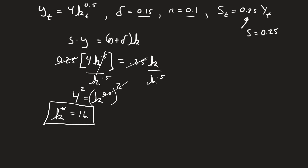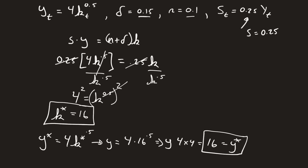Now we just have to plug that back into y. y star is going to equal 4 times k star raised to the 0.5. So that means that y is going to equal 4 times k star, which is 16 to the 0.5, which will let us know that y is equal to 4 times 4, which is equal to 16. So y star is equal to 16 as well.